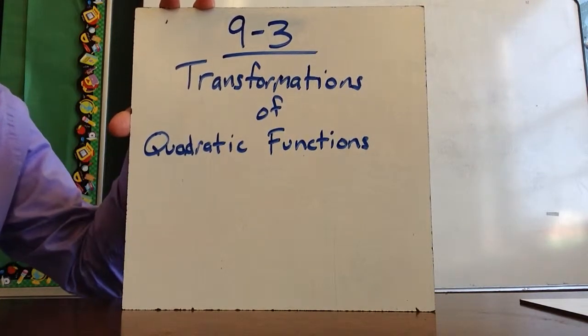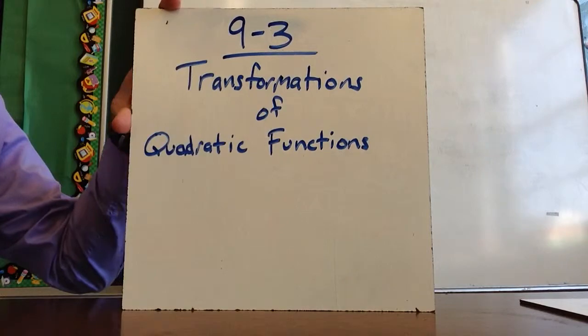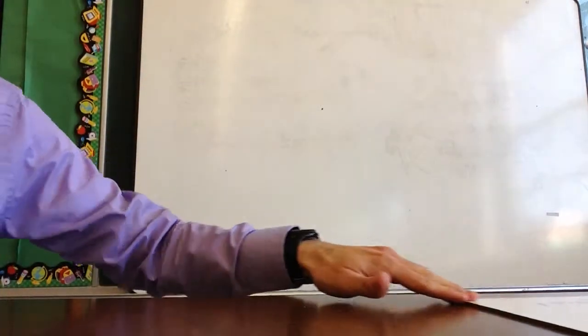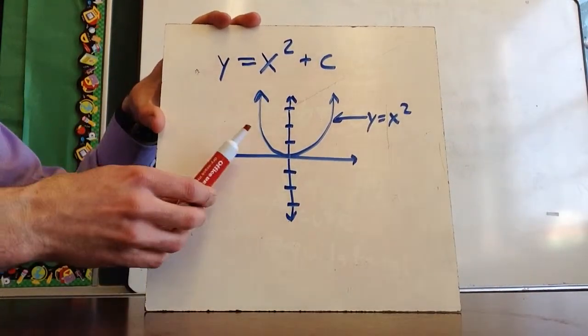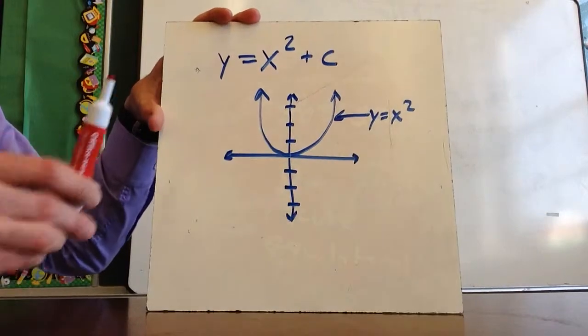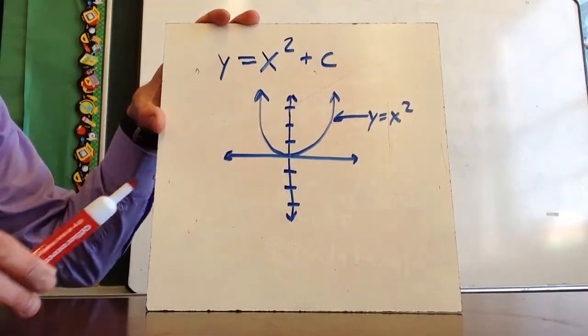This video will discuss chapter 9-3, Transformations of Quadratic Functions. We're going to look at what happens to the graph of y = x² when you start putting numbers in front of it and behind it.